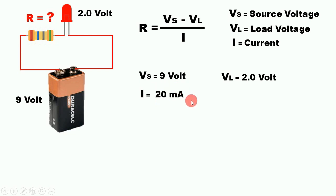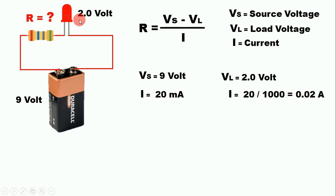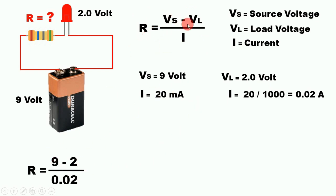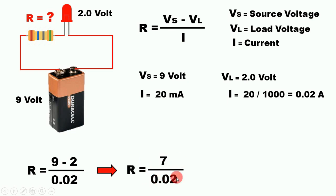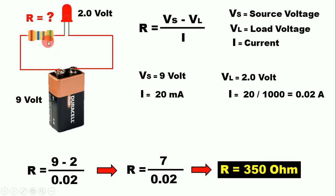Now convert milliamperes into amperes by dividing 20 by 1000, giving 0.02 amperes. Putting these values into the formula: R = (9 - 2) / 0.02 = 7 / 0.02 = 350 ohms. So in this circuit, with a 9 volt battery and an LED with a 2 volt operating voltage, we need to use a 350 ohm resistor.